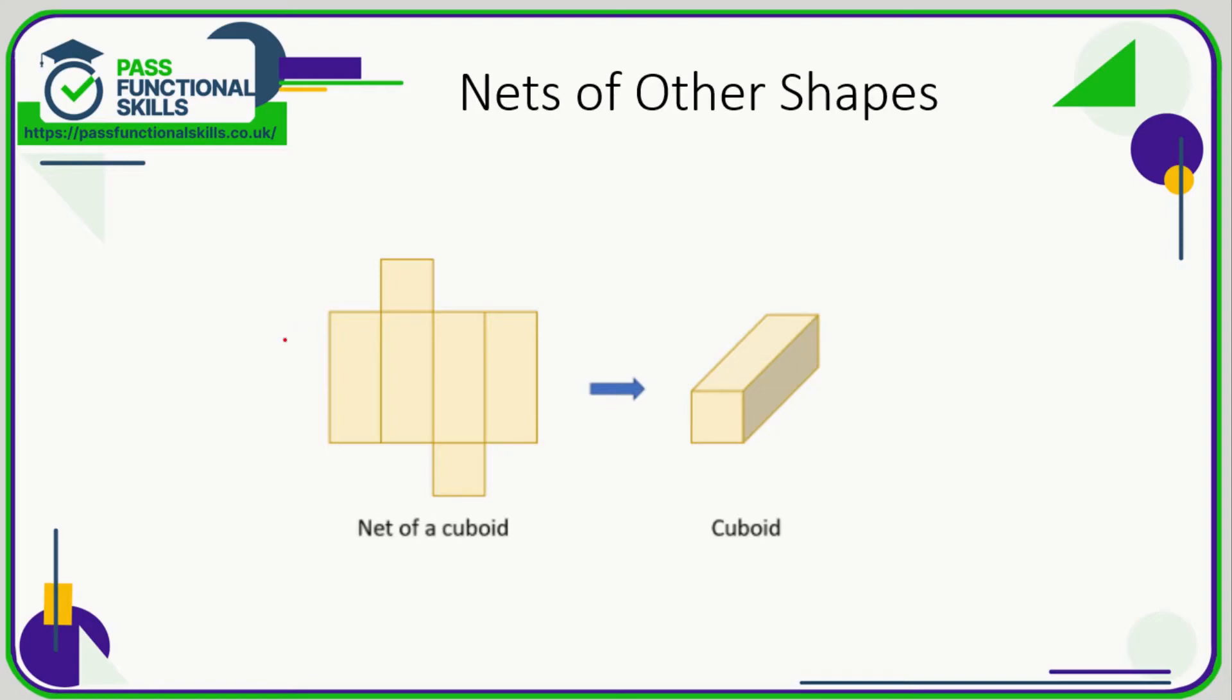So here are some nets of other shapes. This is the net of a cuboid. As you can see it's a rectangle—well, four rectangles: one, two, the third rectangle be underneath, and the fourth rectangle behind. And we need a square on the top and on the bottom. They don't need to be exactly in this position. The square could be here or here or here on the top, and on the bottom.